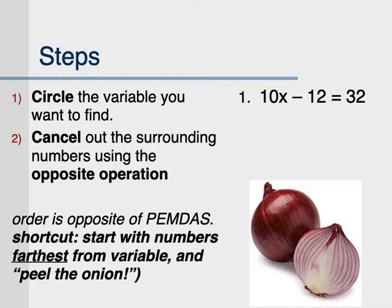Here's a shortcut way of looking at that opposite of PEMDAS: you start with canceling out the numbers farthest away from the variable first. A good visual for this is making an analogy to peeling an onion. You can treat the variable X as the center of the onion, and each number that's nearby as a layer of the onion. The 10 is closest, so it's the inner layer. The 12 is farther away, it's the outside layer. So you have to cancel out the 12 before you cancel out the 10 to get the right answer.